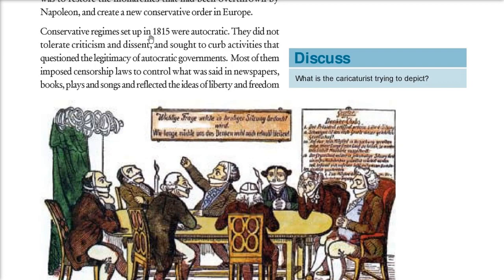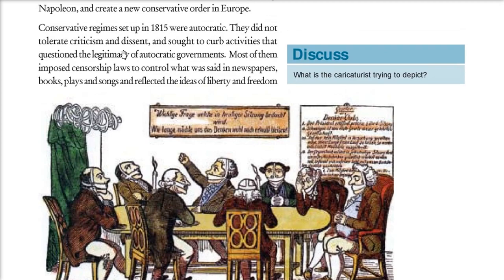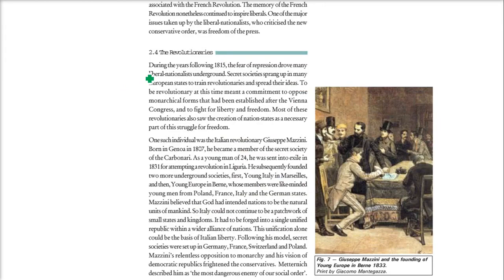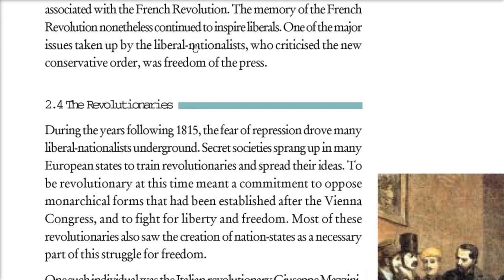The conservative regimes set up in 1815 were autocratic — they could not tolerate any kind of criticism or dissent; they stopped it. Most of them imposed censorship. As shown in one picture, good-minded people sit with their mouths closed — they cannot speak. These rulers imposed censorship on newspapers, books, plays, and songs, because if any of these contained ideas of liberty and freedom, they needed to be stopped, as the ideas of the French Revolution were still flowing.